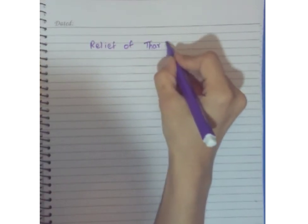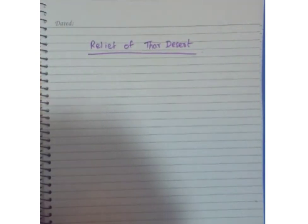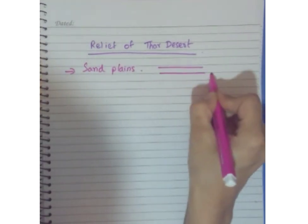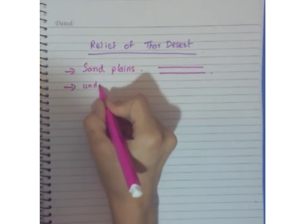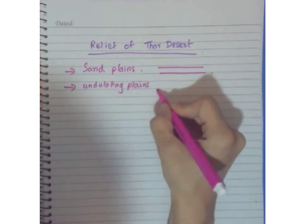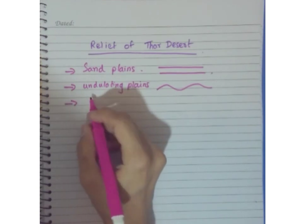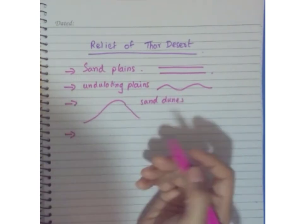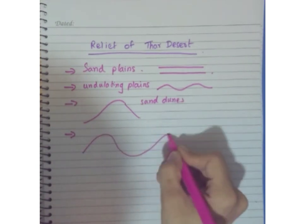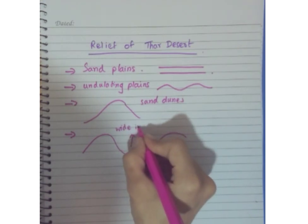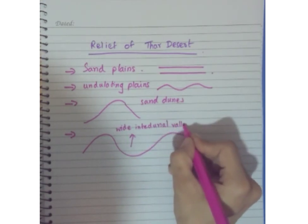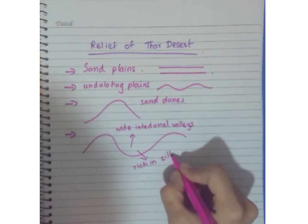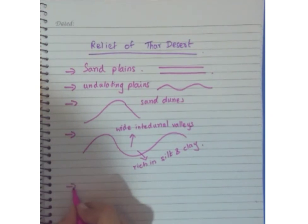Talking about the relief of the Thar desert — we mostly see sand plains, also called sand patties or plain areas. There are also undulating plains, meaning areas with a rise and fall in the landscape. Sand dunes are another dominant feature — a small mound, hill, or ridge. In between these sand dunes there is a wide interdunal valley, which is important because it is rich in silt and clay, and if water is provided, that area can be used for cultivation of crops.